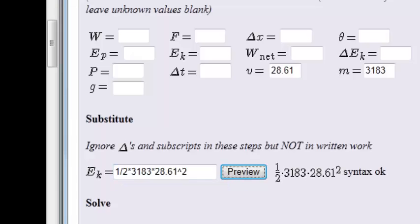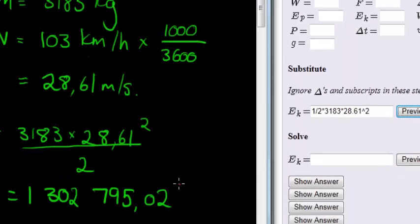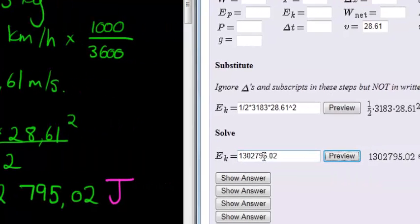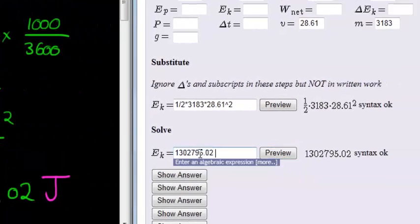And then our final answer is... I forgot to put the units here, very important. The units is joules. Energy is not a vector, so I don't need to give direction. 1,302,795.02. Preview. Oh, I forgot my units again. There we go. And that's it.